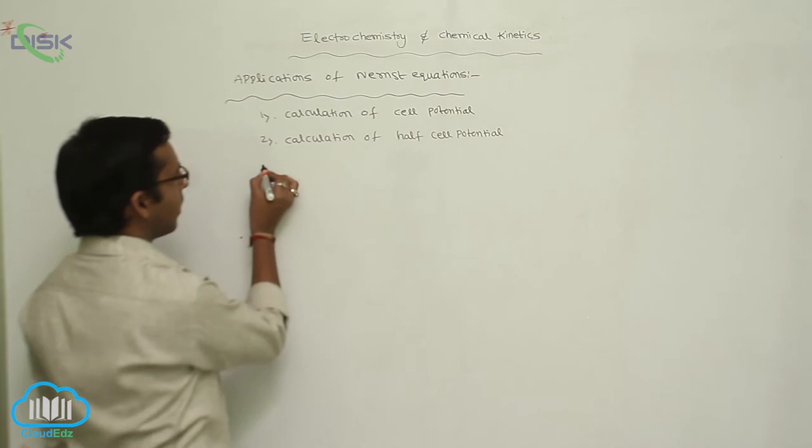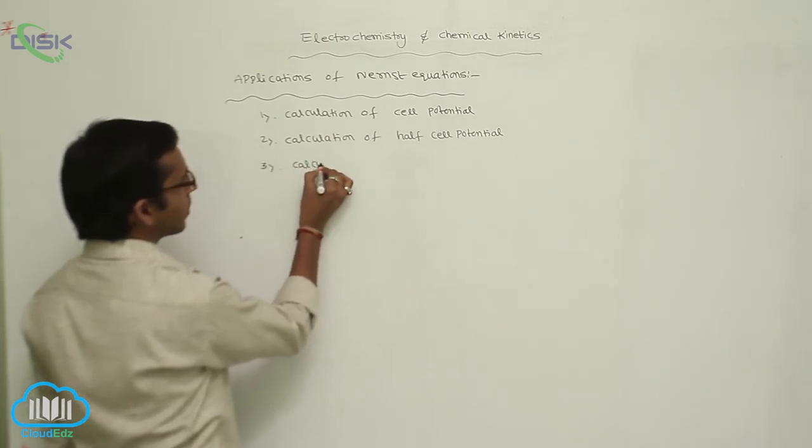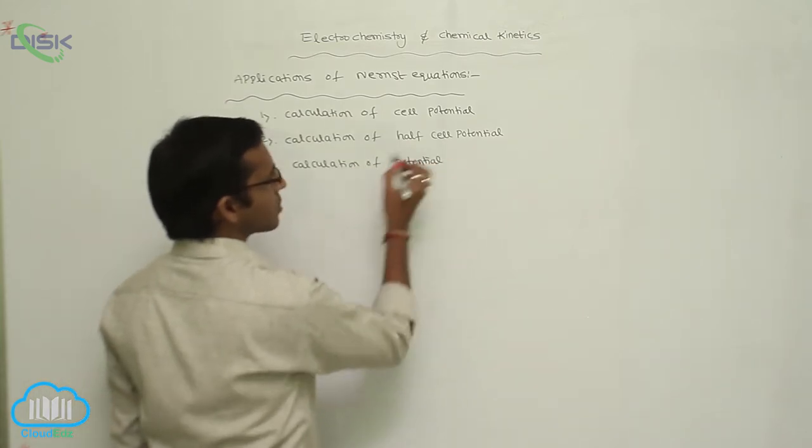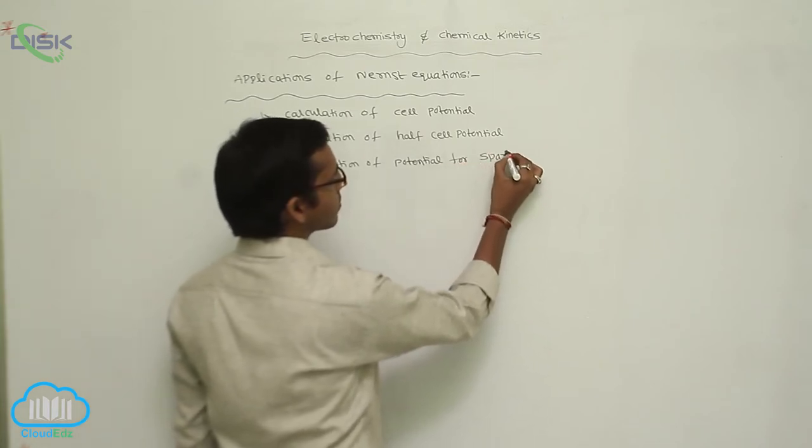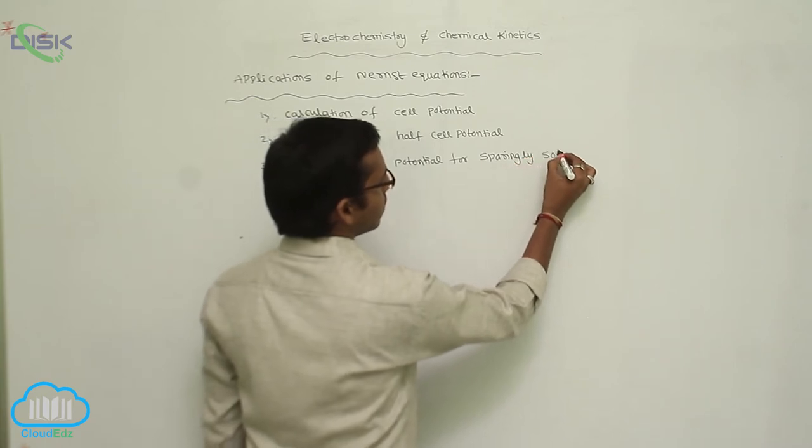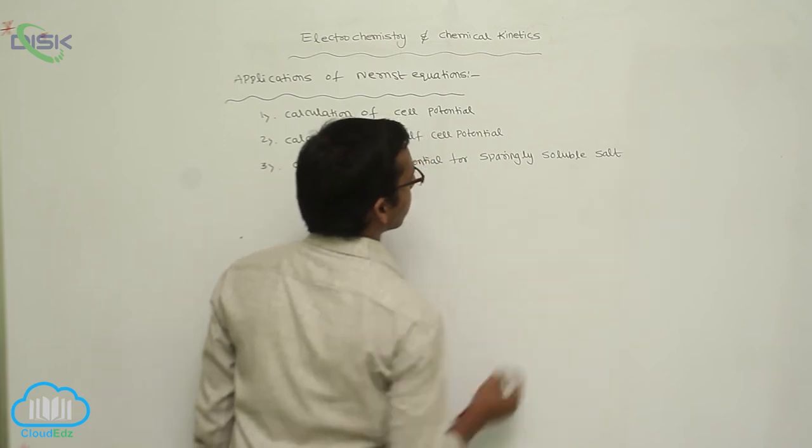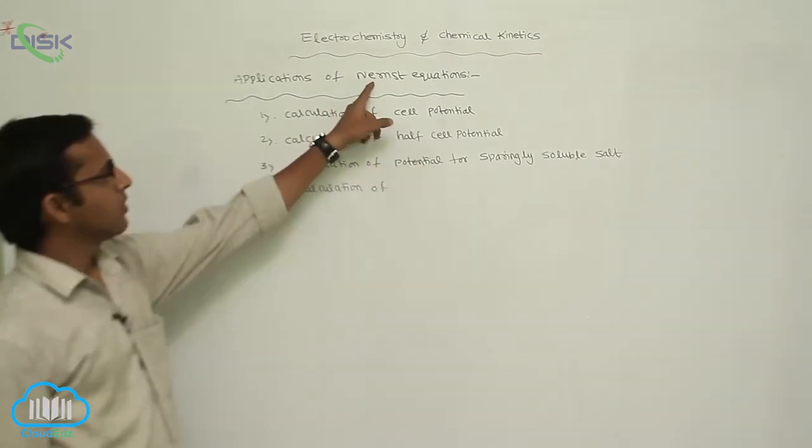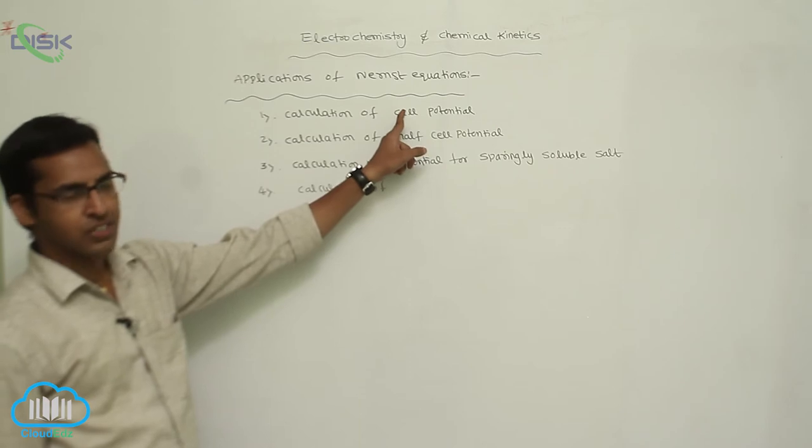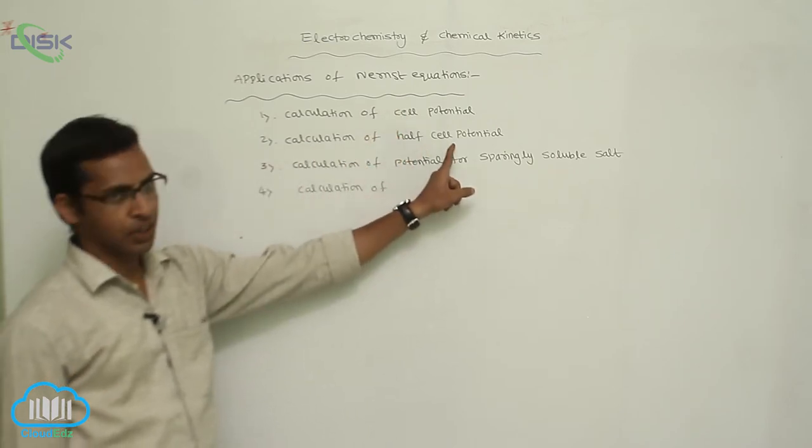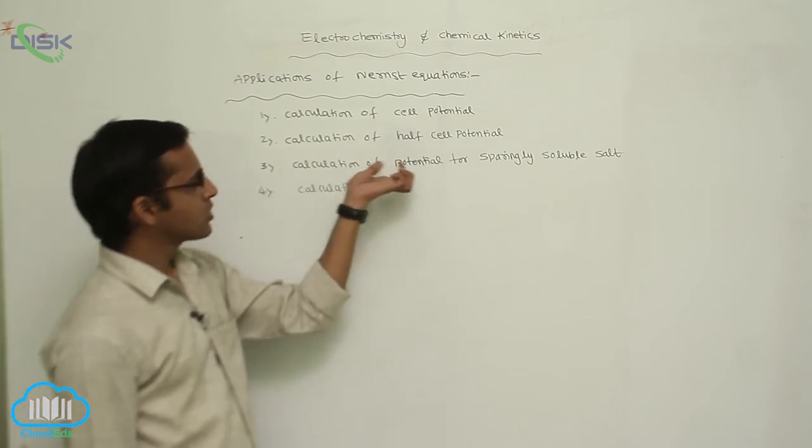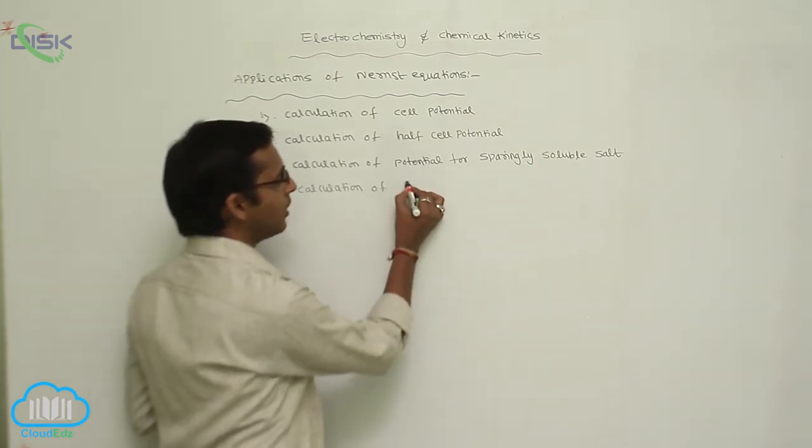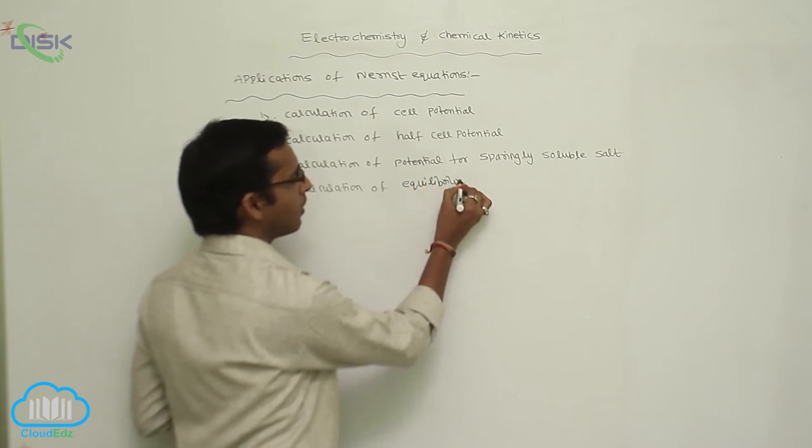The third property is calculation of potential for sparingly soluble salts. And the last property is calculation of equilibrium constant. So we have: calculation of cell potential, calculation of half cell potential, calculation of potential for sparingly soluble salts, and calculation of equilibrium constant.